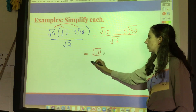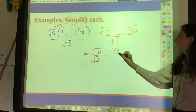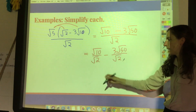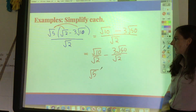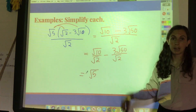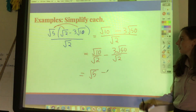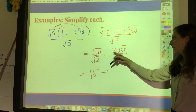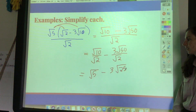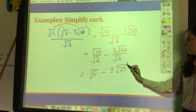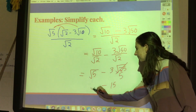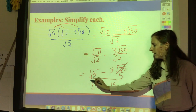These divide evenly, so I'll split it up: square root of ten over square root of two, minus three root of fifty over square root of two. Ten divided by two is five, so the first term becomes square root of five — no radical in the denominator, no rationalization needed. For the second term, 50 divided by two is 25, giving minus three times square root of 25. Square root of 25 is just five, and five times three is fifteen. So the final answer is square root of five minus fifteen.